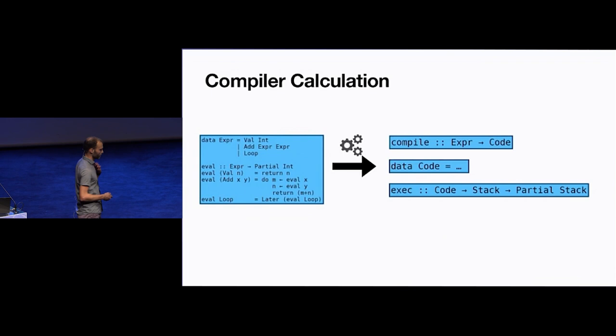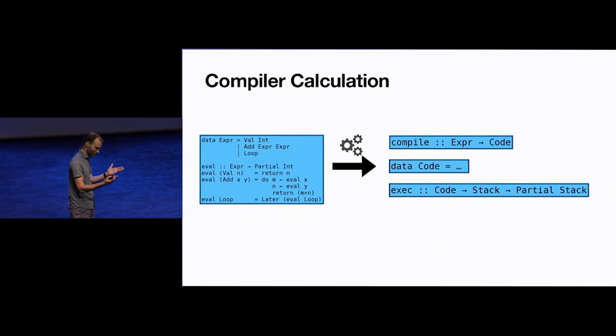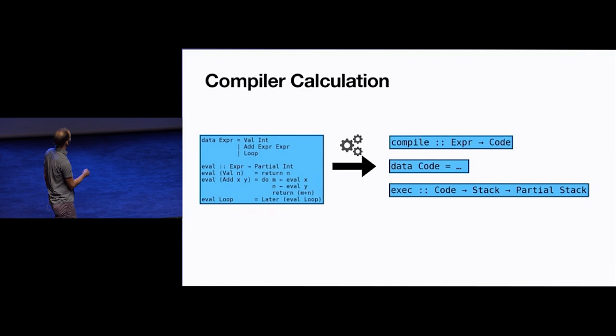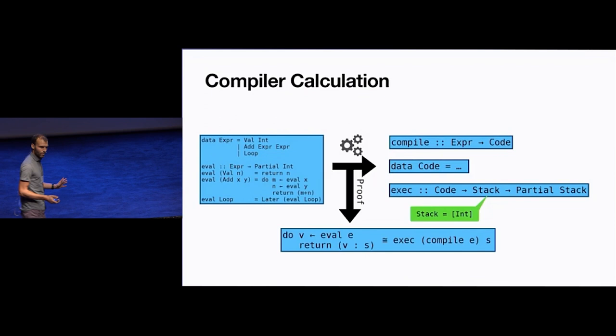This is our semantics on the left. What we want to derive is a compiler that turns our expression language into some code, along with a virtual machine whose semantics we will also derive. The virtual machine takes a piece of code and a stack — just a list of integers — and produces the stack after executing that code.